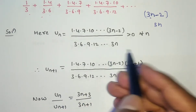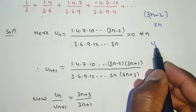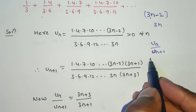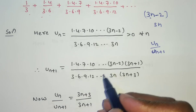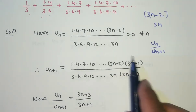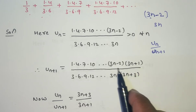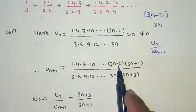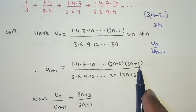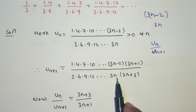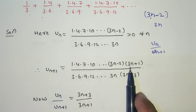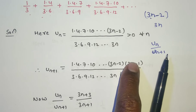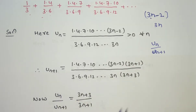For this type of series, apply the ratio test. In the ratio test, we need U_n / U_(n+1). We know U_n; now we find U_(n+1). The n+1 term means adding the common difference to write the next factor in the product. So the numerator of U_(n+1) becomes (3n−2)×(3n+1), and the denominator becomes (3n)×(3n+3). This is the U_(n+1) term containing the nth term.